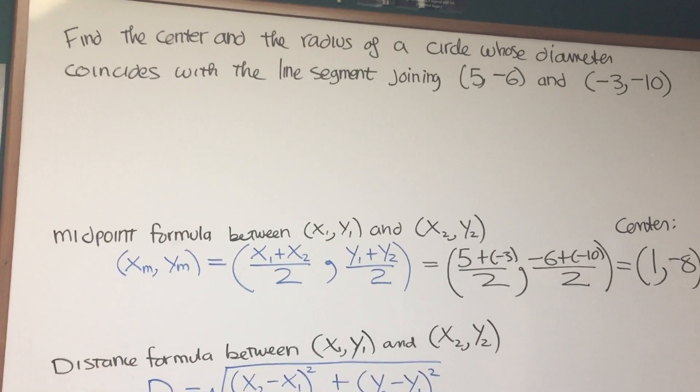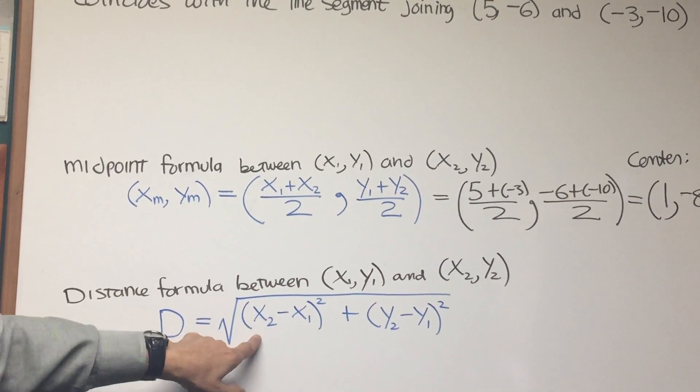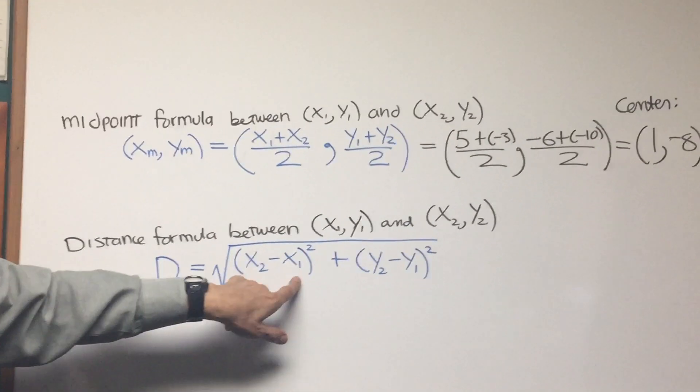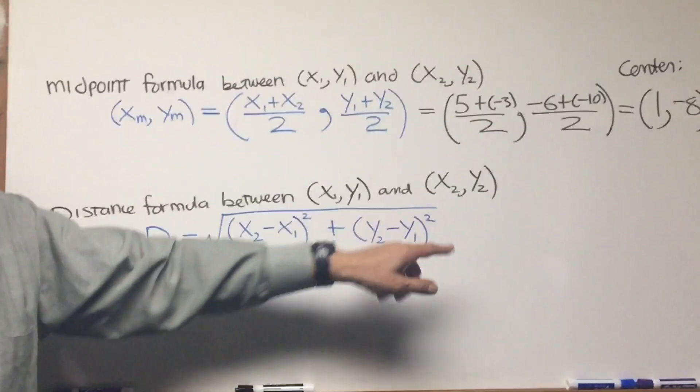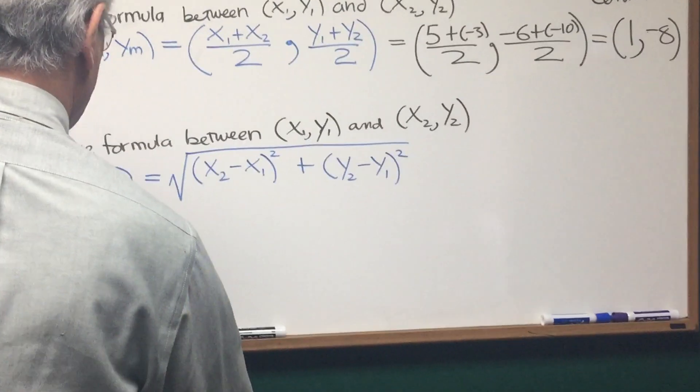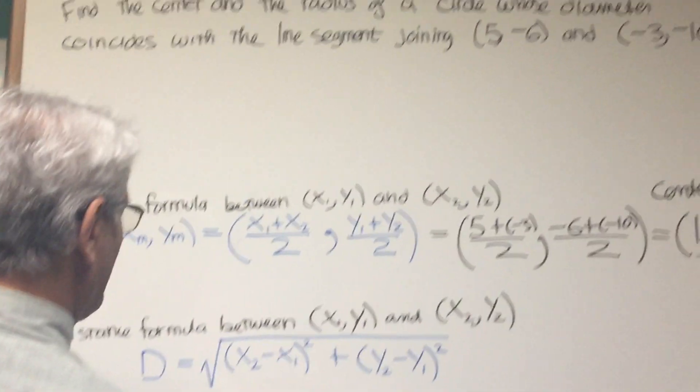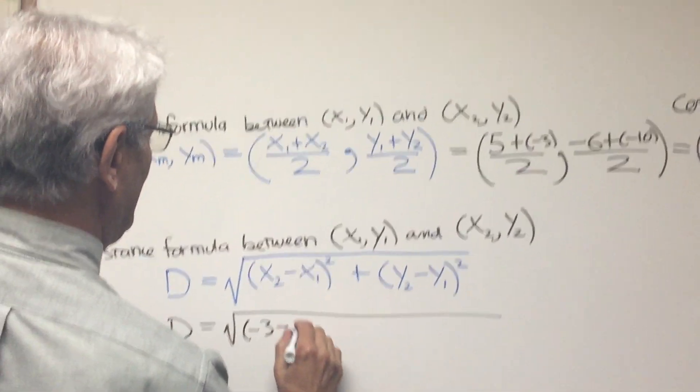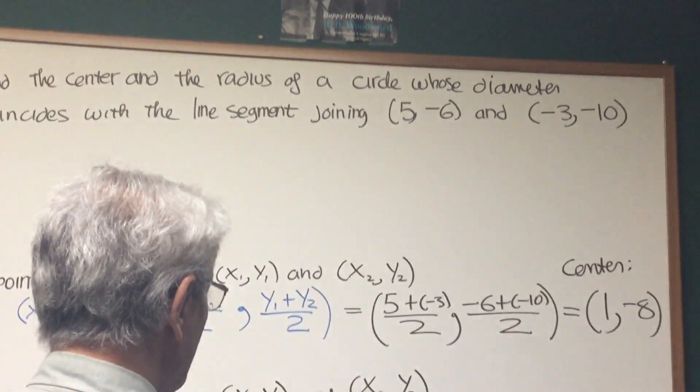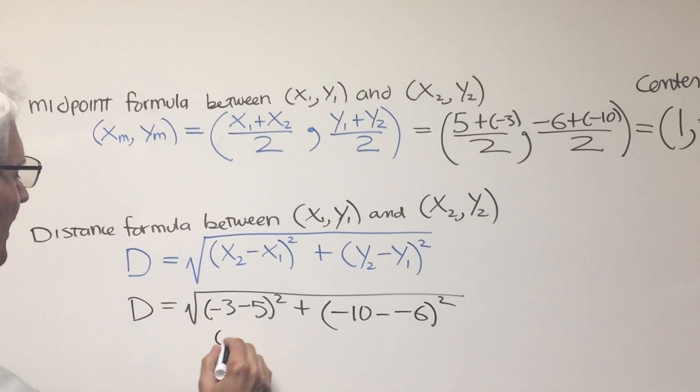Okay, we use the distance formula which comes out of the Pythagorean theorem. Distance is equal to the square root of the two points (x₁, y₁), (x₂, y₂). The difference in the x coordinate squared plus the difference in the y coordinate squared. So, the diameter of this circle is going to be the square root of x₂ minus x₁, which is (-3 - 5) squared, plus y₂ minus y₁, which is (-10 - (-6)) squared.